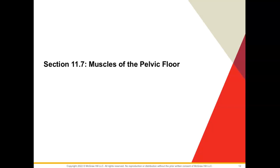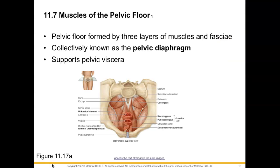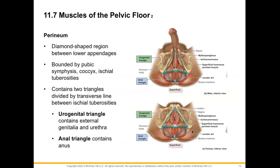Welcome back to your chapter 11 video lecture series where we're going to talk about section 11.7 on the muscles of the pelvic floor. Our pelvic floor is going to be formed by three layers of muscles and fascia. This is collectively known as our pelvic diaphragm and is going to help to support the pelvic viscera or organs. So we'll start off by discussing the perineum.